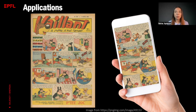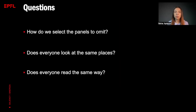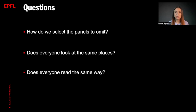However, there are some important questions in this reconfiguration process. How do we select the panels to omit? Does everyone look at the same places, or does everyone read the same way? And is it possible to quantify these with scientific methods?